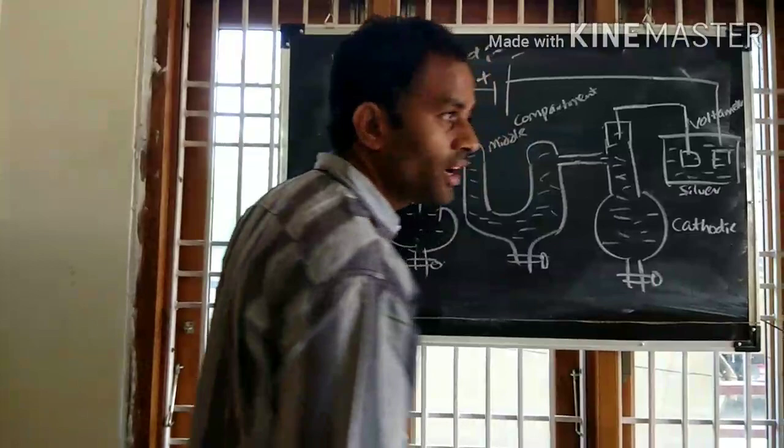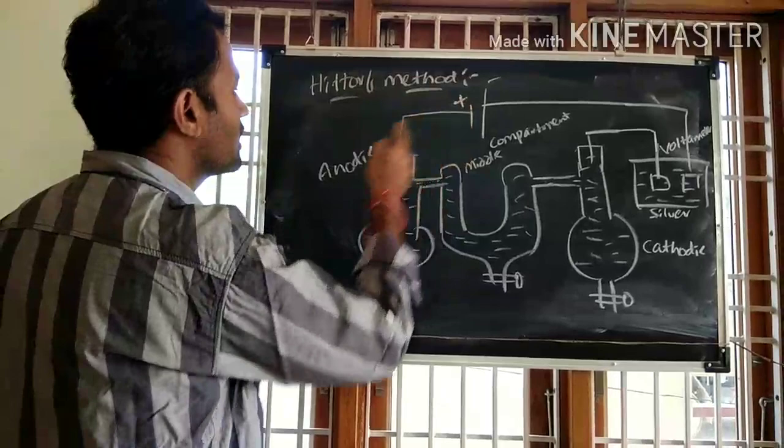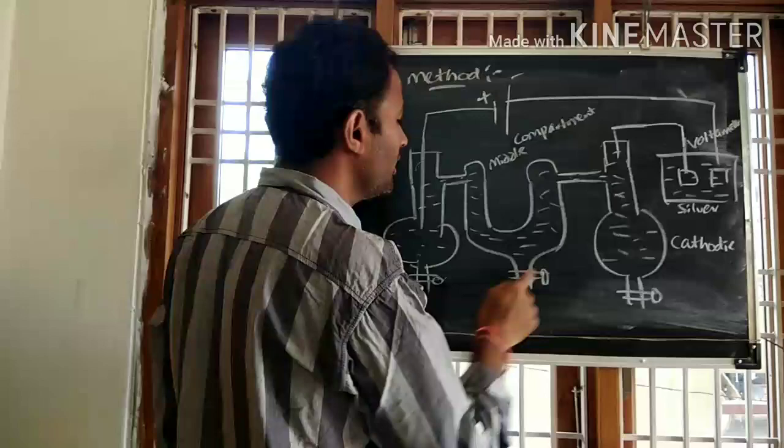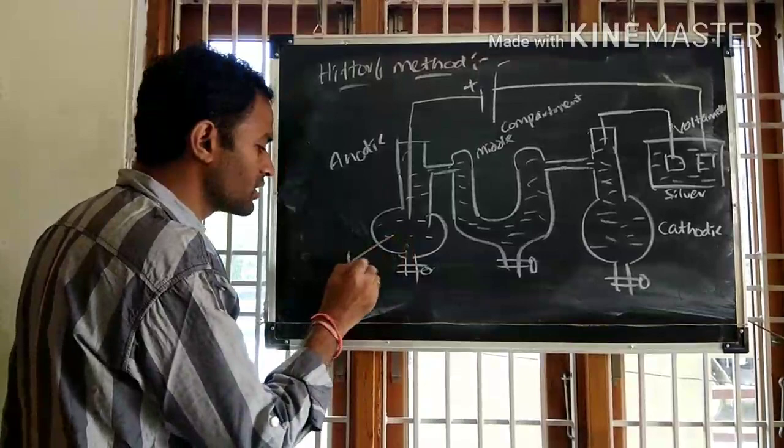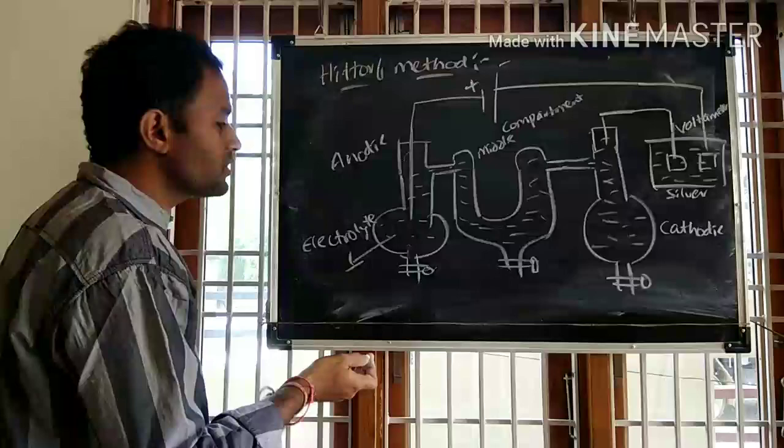The compartment connected to the positively charged electrode is called the anodic compartment, and the other is the cathodic compartment, with a middle compartment in between. The electrolyte for which we are going to calculate the transport number is filled into this device.